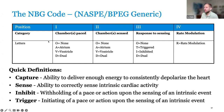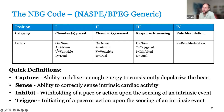Looking at our NBG code categories: the first position is the chamber being paced — O means none, A means atrium, V means ventricle, and D means dual (both). The second position is the chamber being sensed — same options: none, atrium, ventricle, or both.